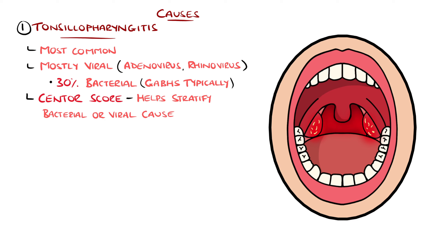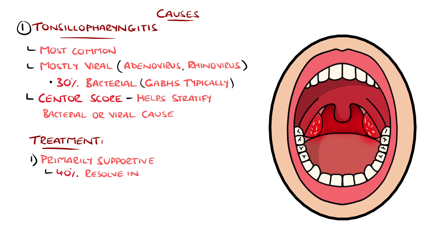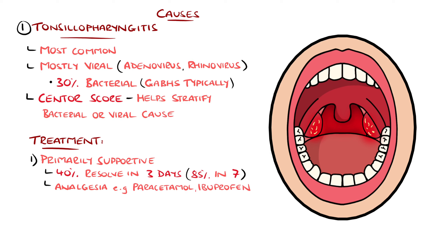Treatment of tonsillopharyngitis is mostly supportive, with 40% resolving in three days and 85% within one week regardless of a viral or streptococcal infection. This includes analgesia such as paracetamol and non-steroidal anti-inflammatories like ibuprofen, and topical analgesia like sprays or lozenges are also options.